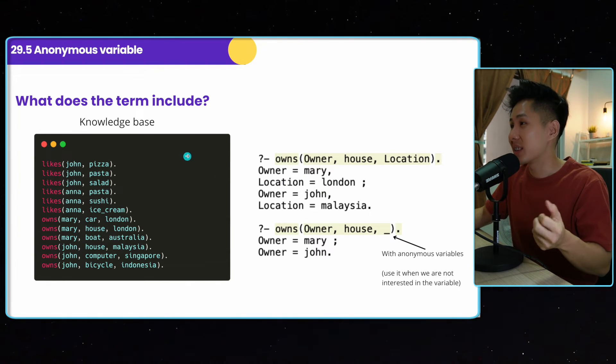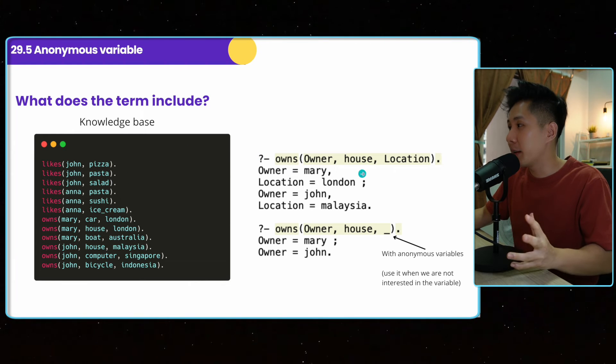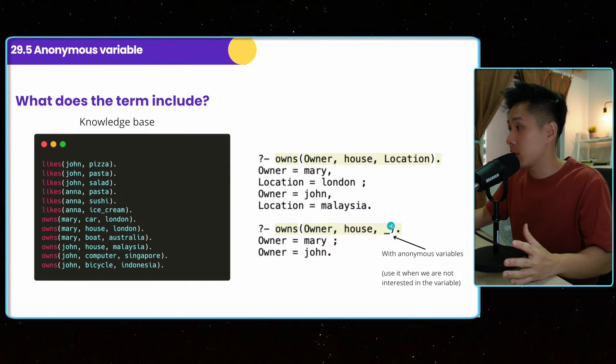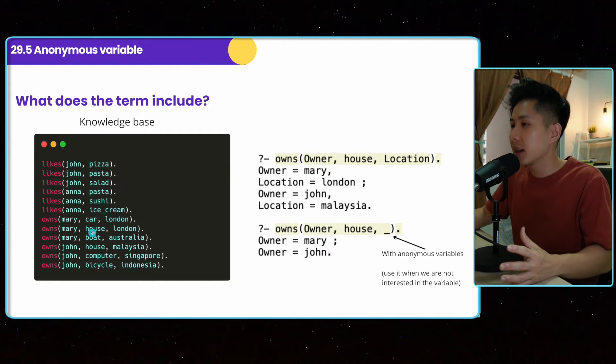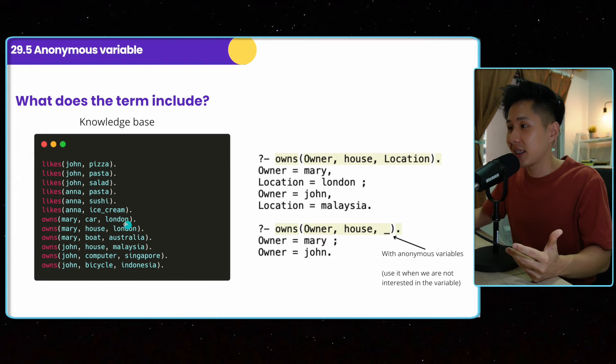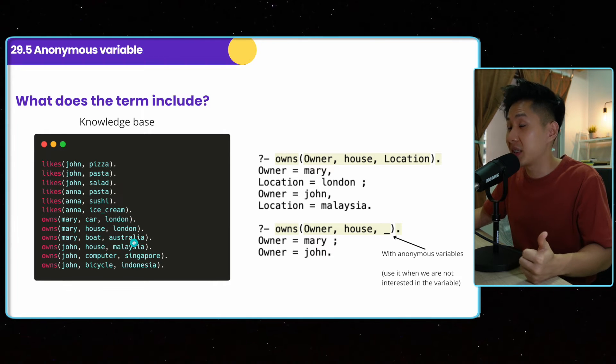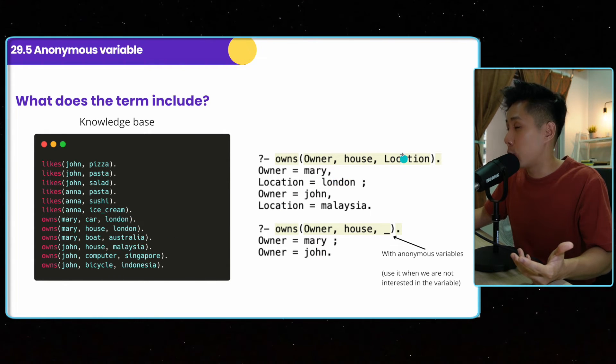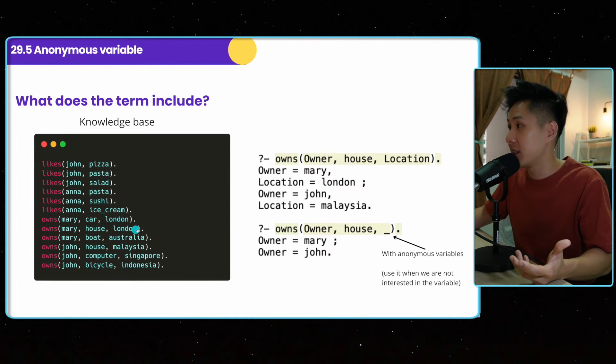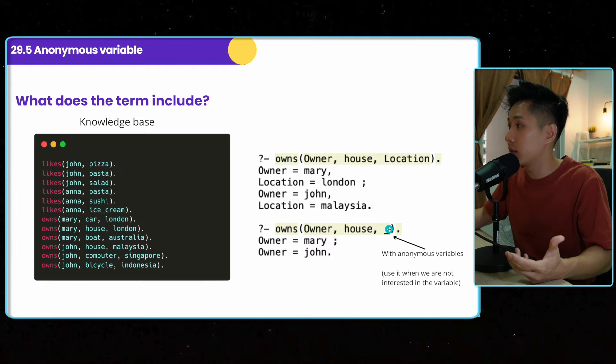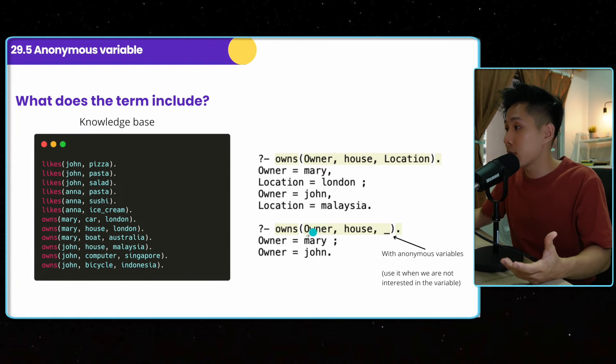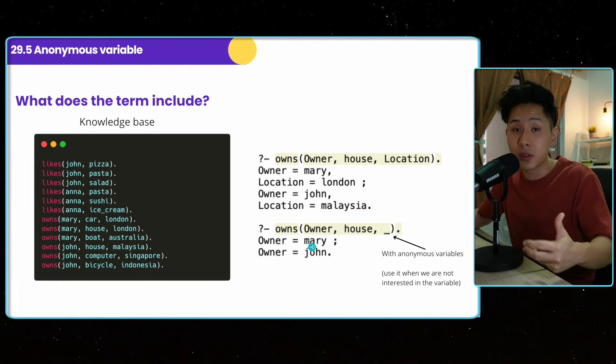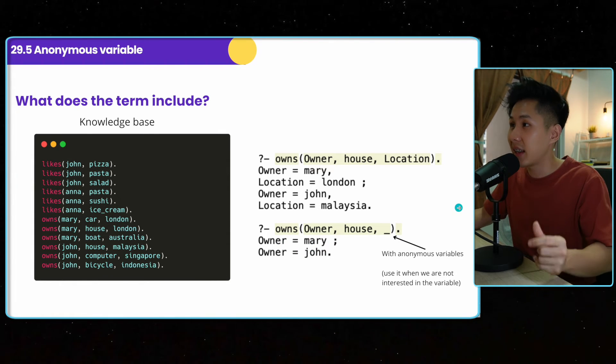So now, what does the term include? And there are times when you can use anonymous variable. So this is when you use... I changed the file a little bit. Basically shows where they own the object, London. So the third argument is the location. And then with a variable, I can print out what's Mary own, a house in London. But if I don't care about the location, I can just put an underscore to signify that this is an anonymous variable. And Prolog will just print out who owns the house instead, instead of printing out the location. That's how it works.